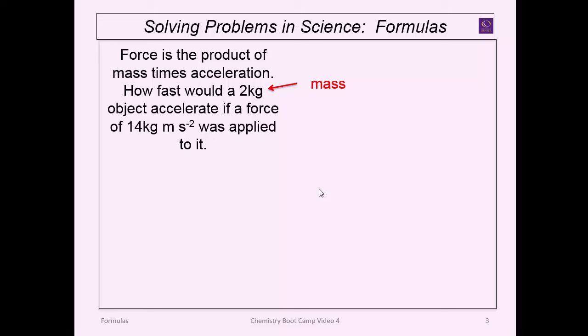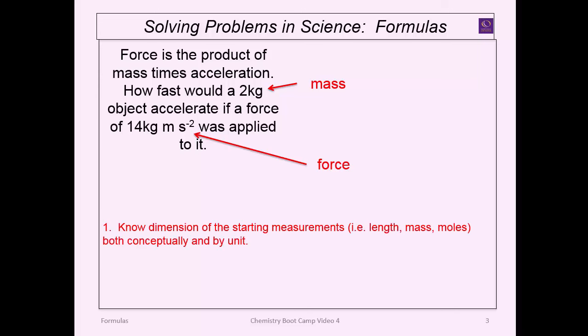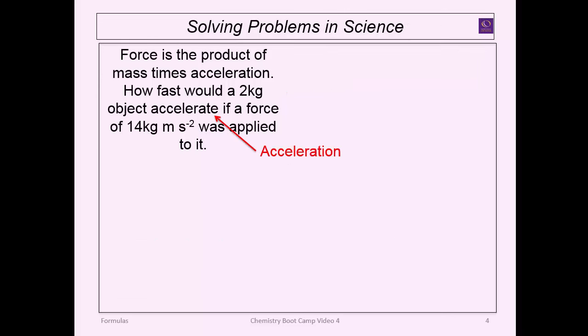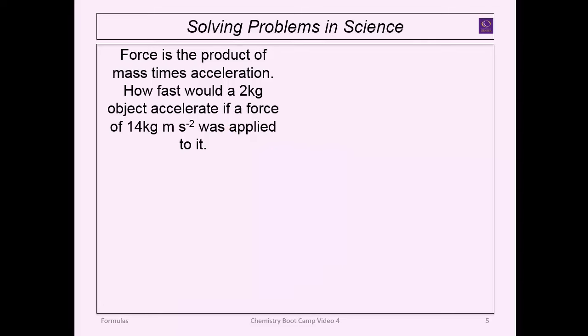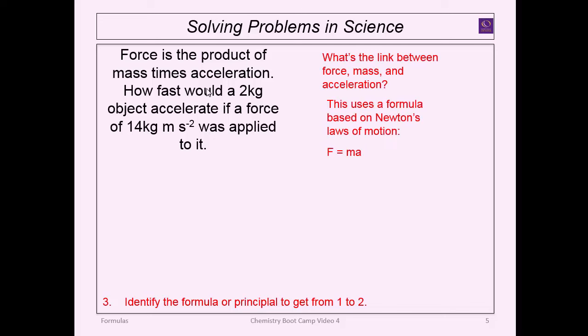Look at the dimensions you're given. Here I'm given mass and force — two dimensions. Know the dimension you're starting with, then look for the dimension you're trying to solve for. In this case, we're looking for acceleration — that's step two. Step three is asking: what's the formula, what's the scientific relationship? F equals ma. Now you can just plug and chug — plug in what you know, make sure the units make sense, then solve.